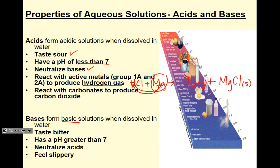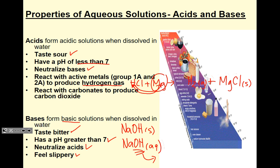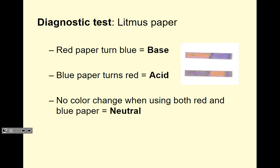Bases form basic solutions when dissolved in water. Their properties include: they taste bitter, have a pH higher than 7, they neutralize acids, and they feel slippery. A base is something that contains hydroxide — for example, NaOH. If you dissolve NaOH in water, the presence of the hydroxide ion makes the substance a base and it exhibits those properties only when dissolved. Litmus paper test: red litmus paper turns blue in the presence of a base; blue litmus paper turns red in the presence of an acid; if both stay unchanged, the solution is neutral.